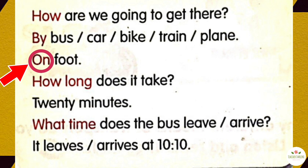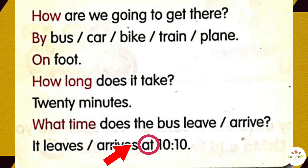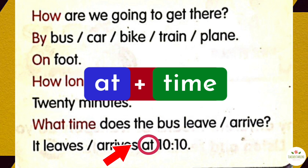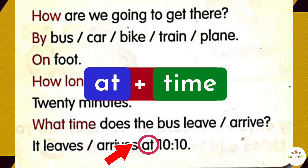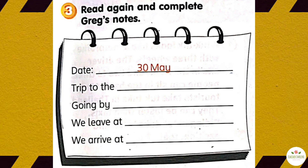We use 'on' before 'foot'. For example: on foot. We use 'at' before time. For example: at 10 o'clock, at half past seven, at six o'clock.